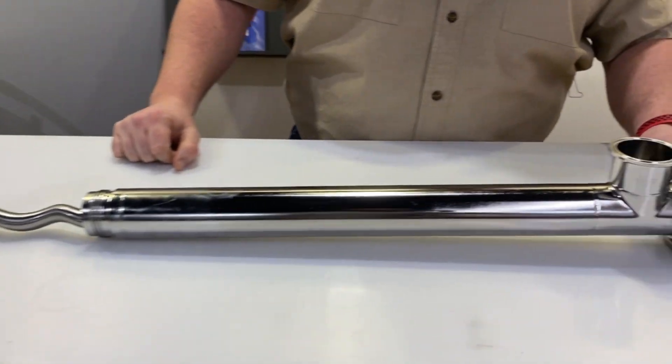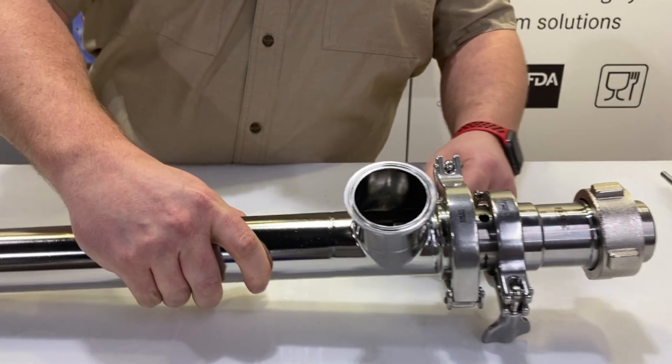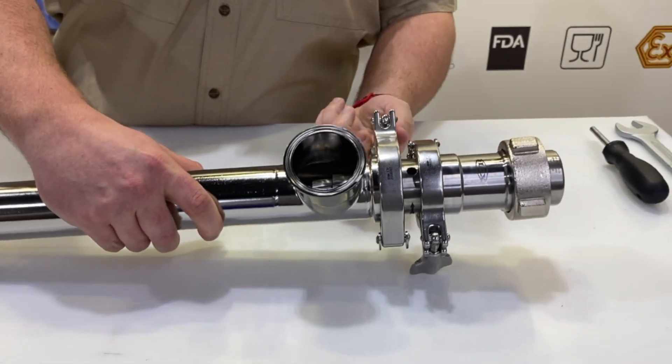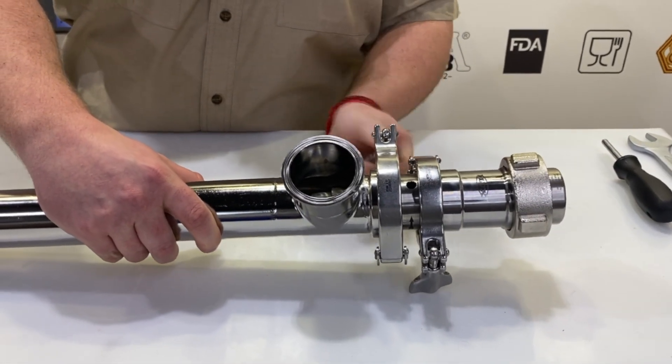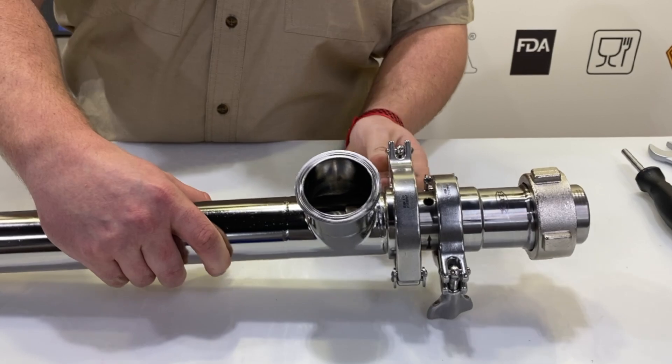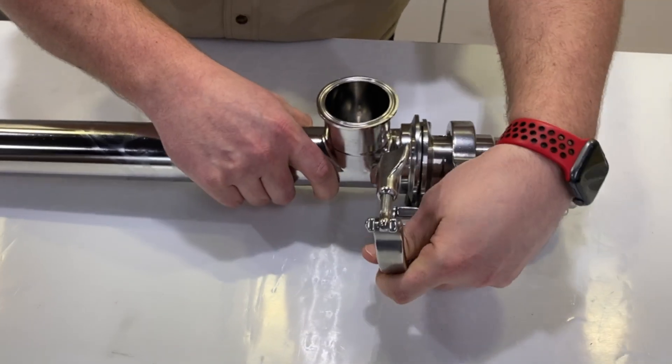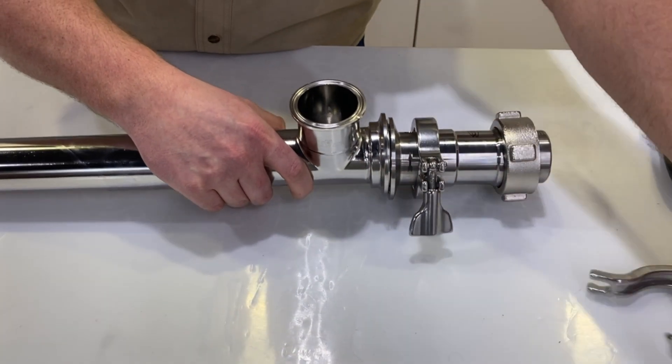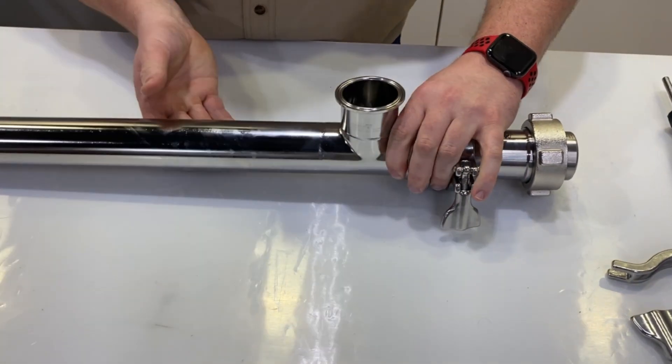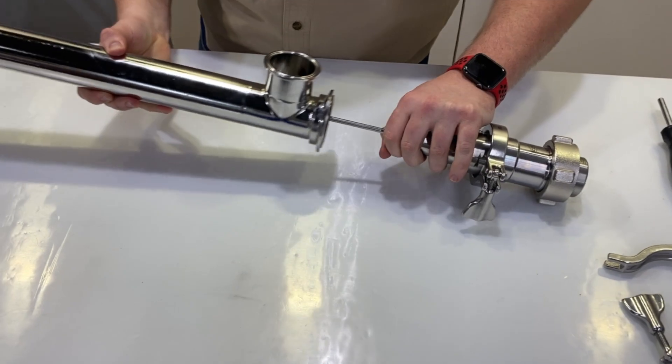Then we'll move up to the top of the tube and remove the larger of the two tri-clamps. Once that's removed we'll be able to slide the pump tube off.